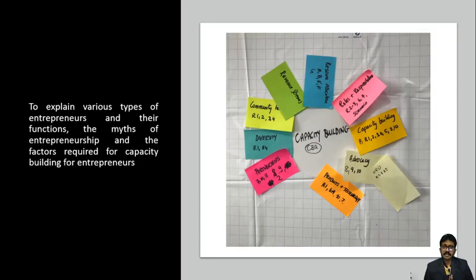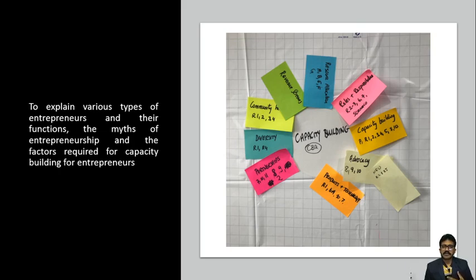Another important aspect is the capacity building of entrepreneurs. The objective is to explain the various types of entrepreneurs, their functions, the myths of entrepreneurship, and factors required for capacity building. We may have several myths that entrepreneurship is very risky or not going to be successful — so we will learn how to overcome that risk, what is the risk management involved, and what is the risk-to-reward ratio in entrepreneurship.